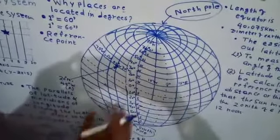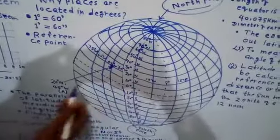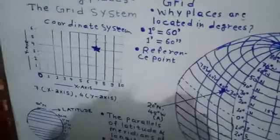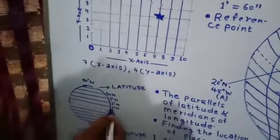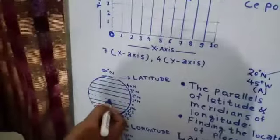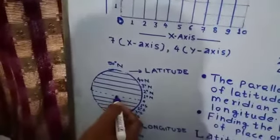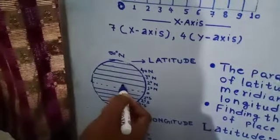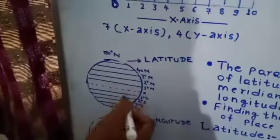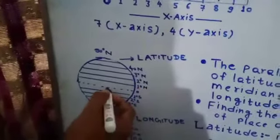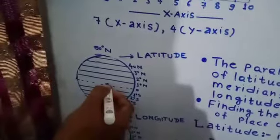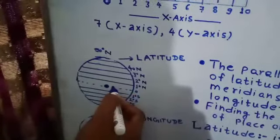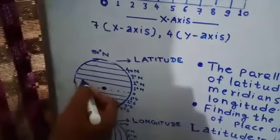What are latitude and longitude? We'll see longitude later, but first we'll see latitude in detail. Latitudes are nothing but the angular distance of any place from the equator — it is the angular distance north or south of the equator, by taking the equator as a reference point.